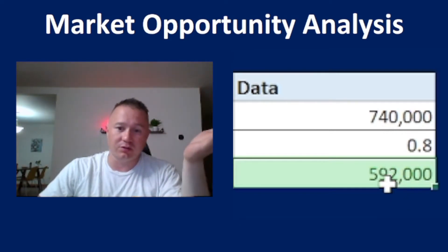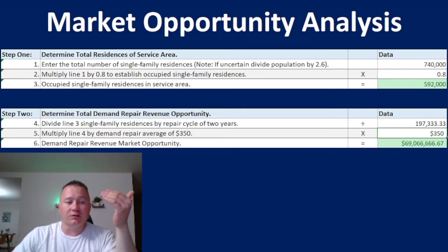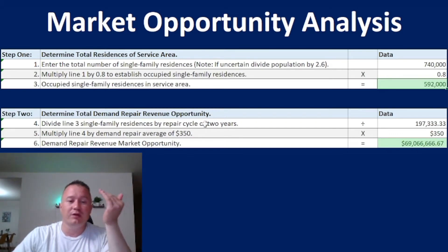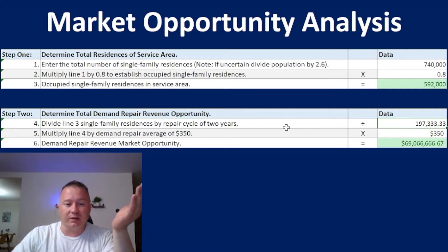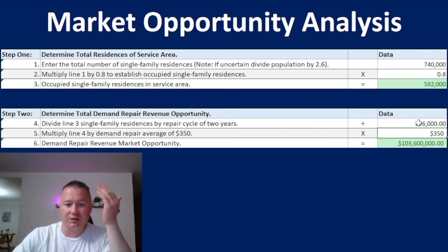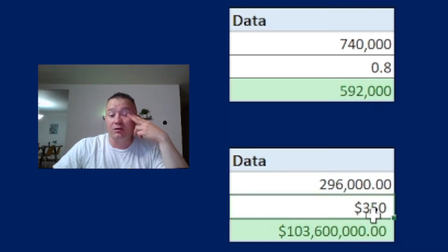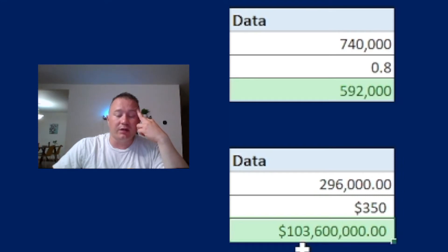The next step, number two, is to determine total demand repair revenue opportunity — how much money you can make on just a service call. The practice thinking is that every single household has to call for HVAC repair at least once every three years. I put the number three here; if I put two, which is the statistical average, we divide by two. If our average service call costs $350, we get $103.6 million dollars — that's the market opportunity just in Santa Clara County.